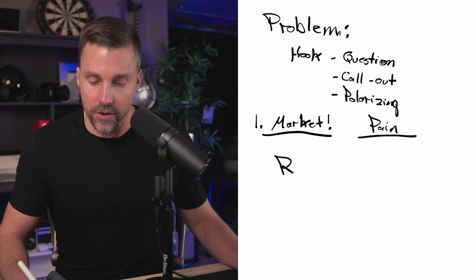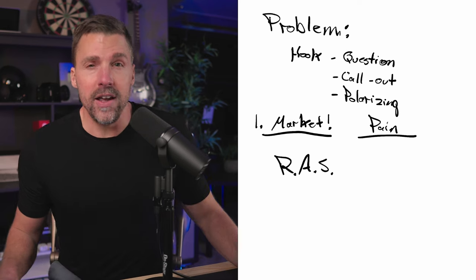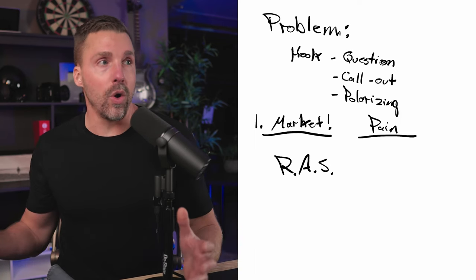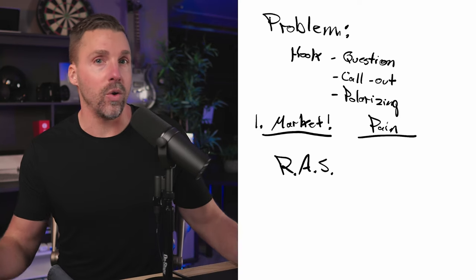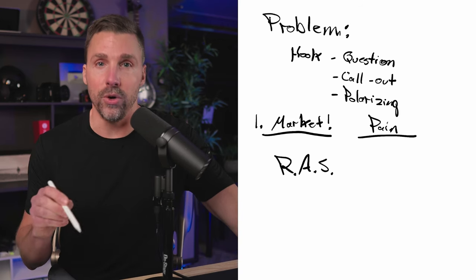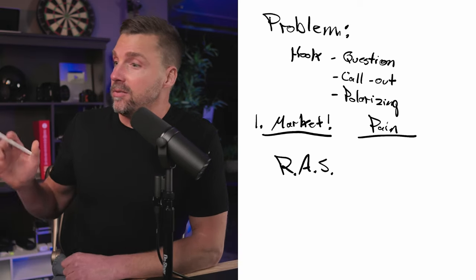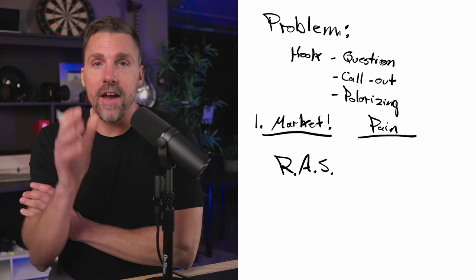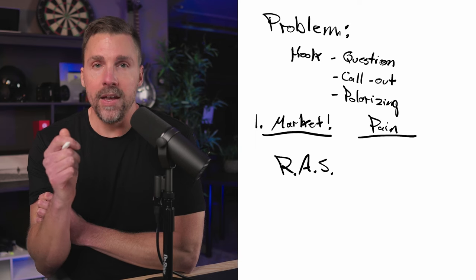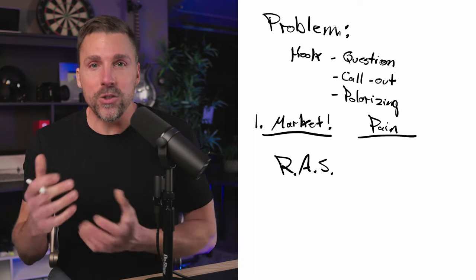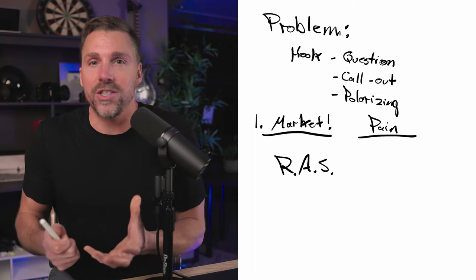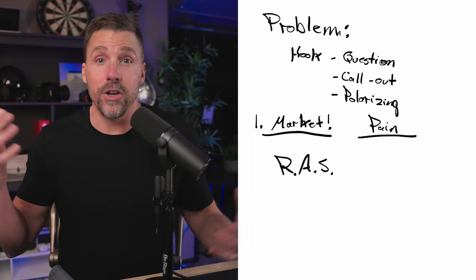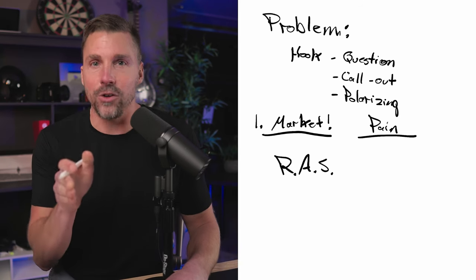Why does the callout work? Something called the RAS — reticular activating system — a little part of your brain that gets you to pay attention to things that are important to you and block out everything else. Take a quick look around your room or wherever you are right now and look for everything that is blue. Find everything blue — everything you can think of. Then close your eyes and try to visualize everything that's red. It's going to be tough. It's hard to do because your brain was cued in looking for all the blue stuff. The same thing happens when you buy a new car and all of a sudden you see that car everywhere; you get a new shirt, you see that shirt everywhere. Your brain is super smart and dialed right into things like that.